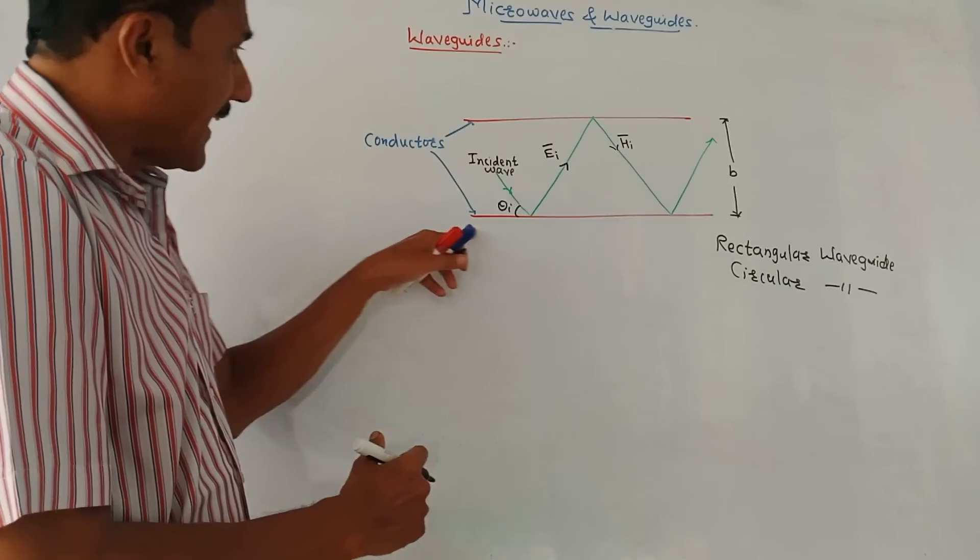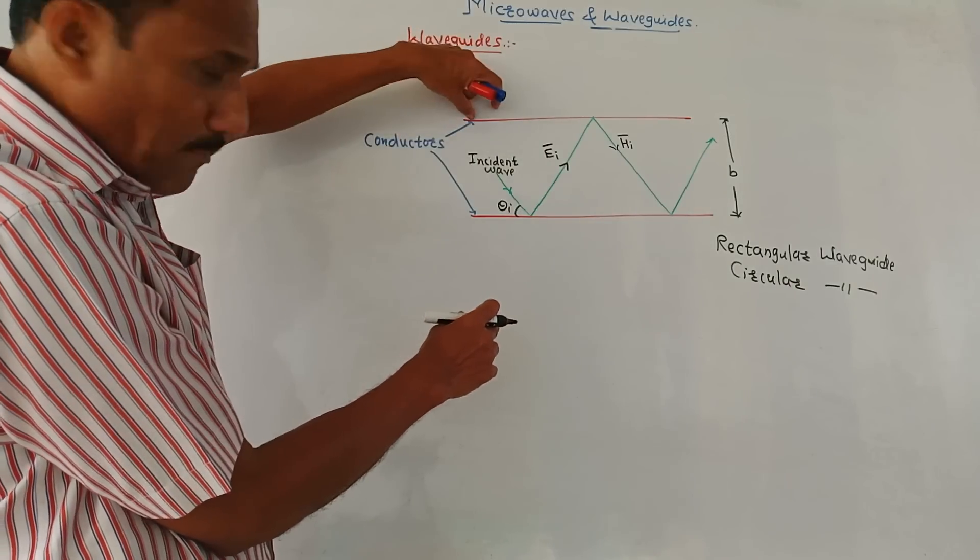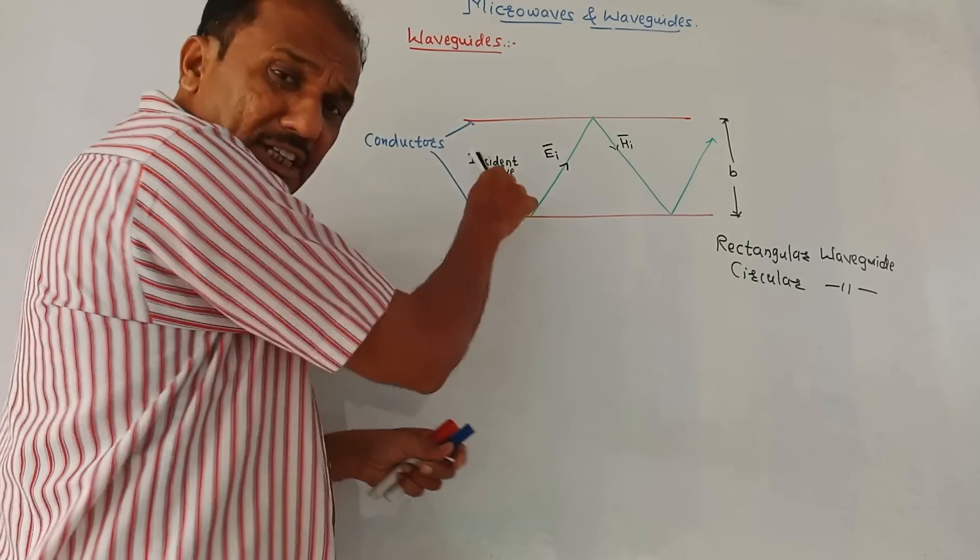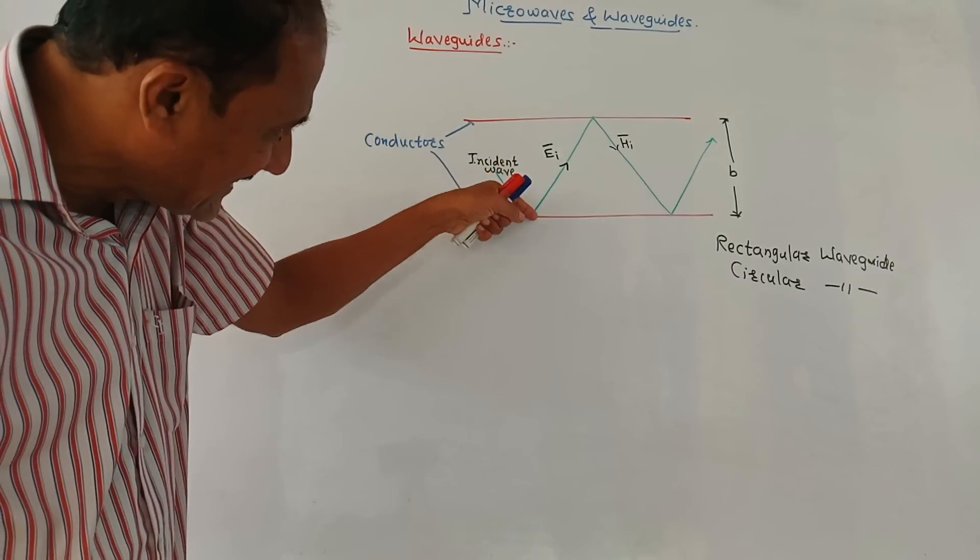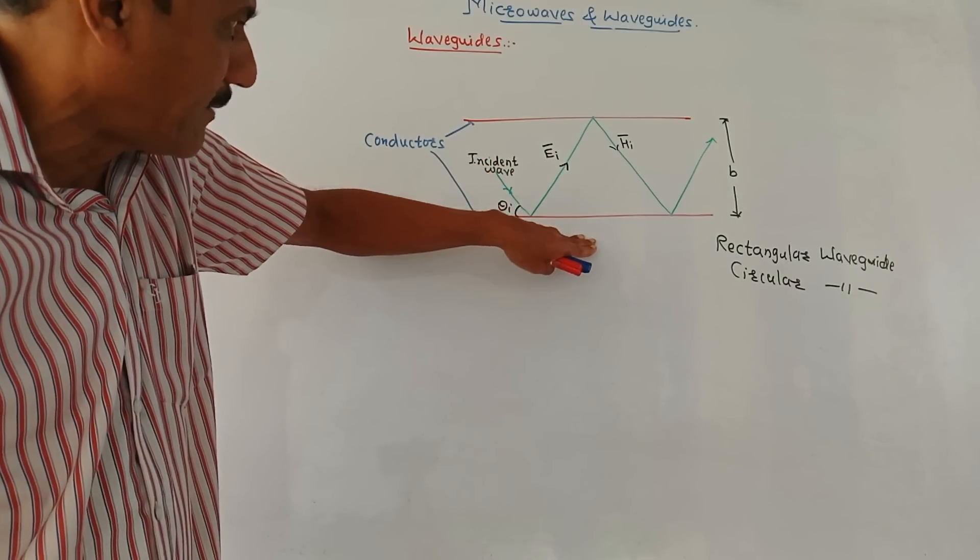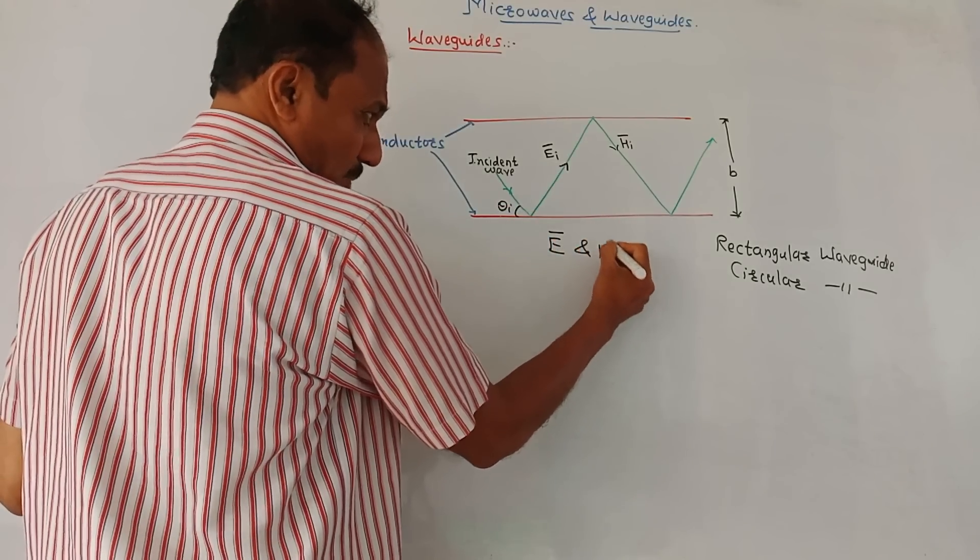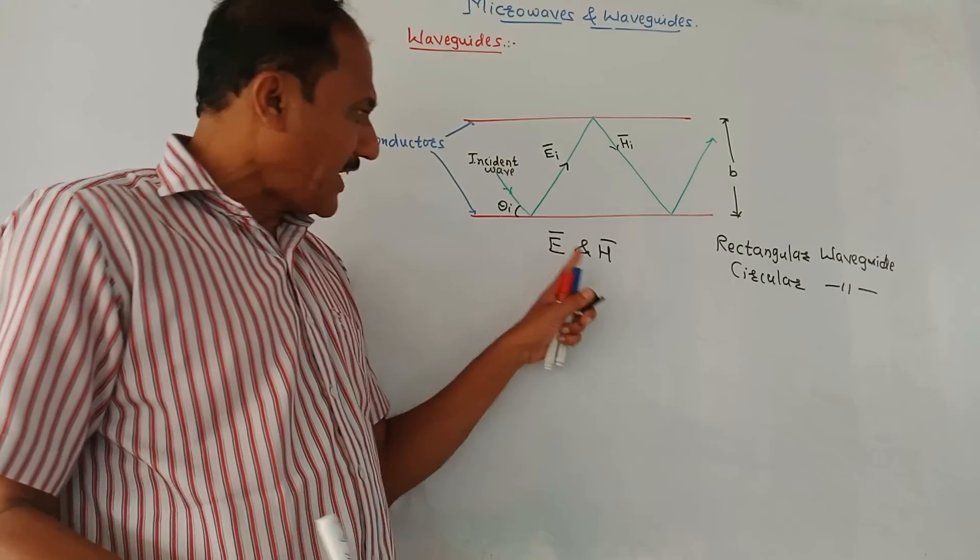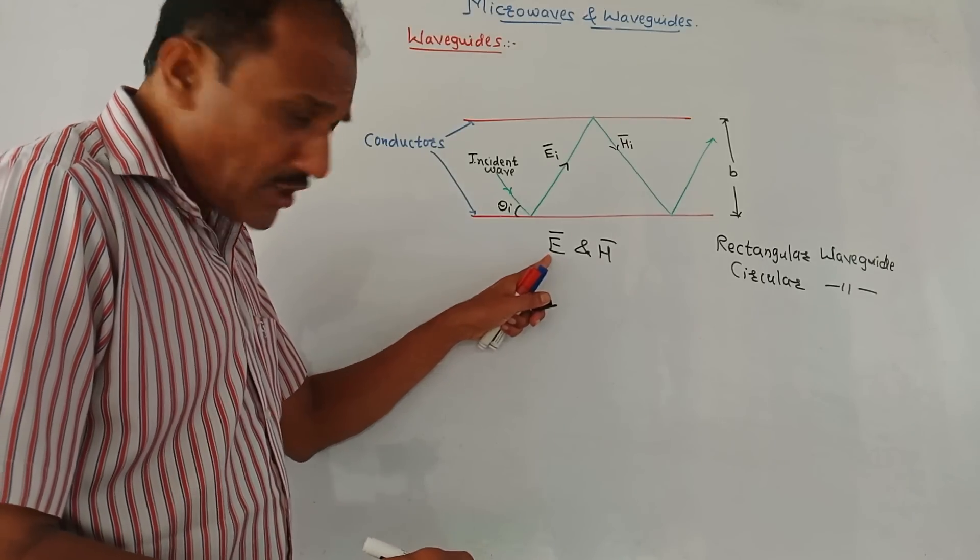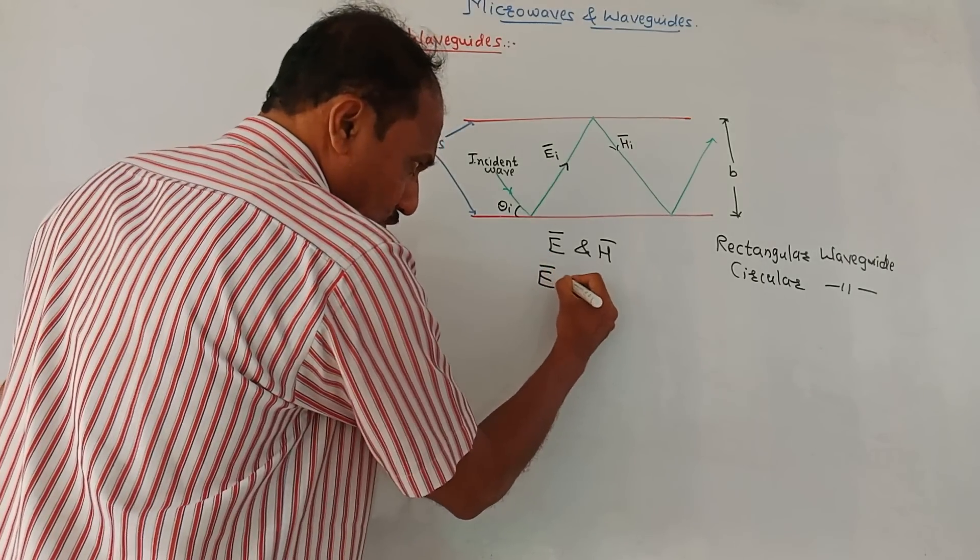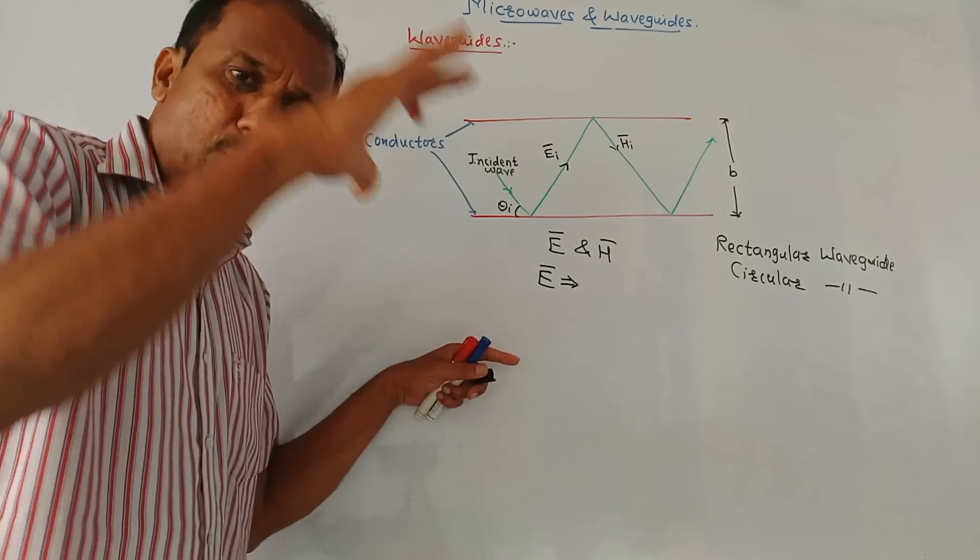Now, refer this diagram. Here, I have shown a rectangular waveguide. Two conductors are shown. These are the two conductors, upper conductor and lower conductor. This is the incident wave, incident microwave signal. Theta i is an angle made by this incident waveguide with respect to this lower conducting plate. Now, there are two types, two parts. One is E bar and another is H bar. We know that E bar is electric field intensity. H bar is magnetic field intensity.